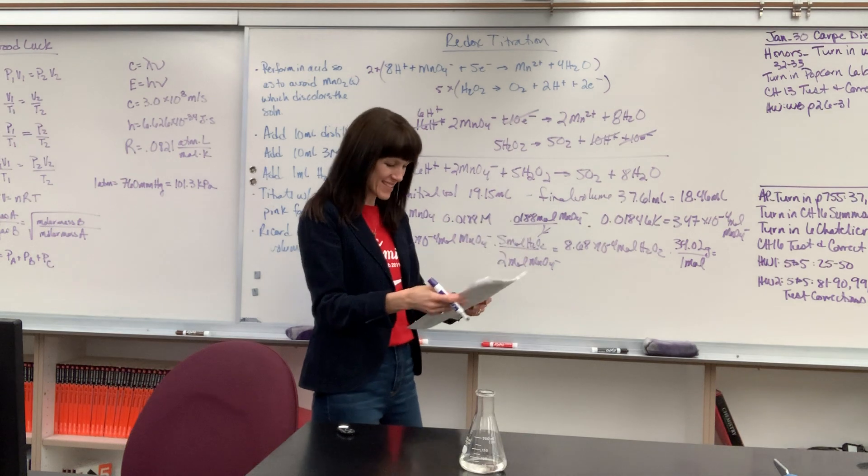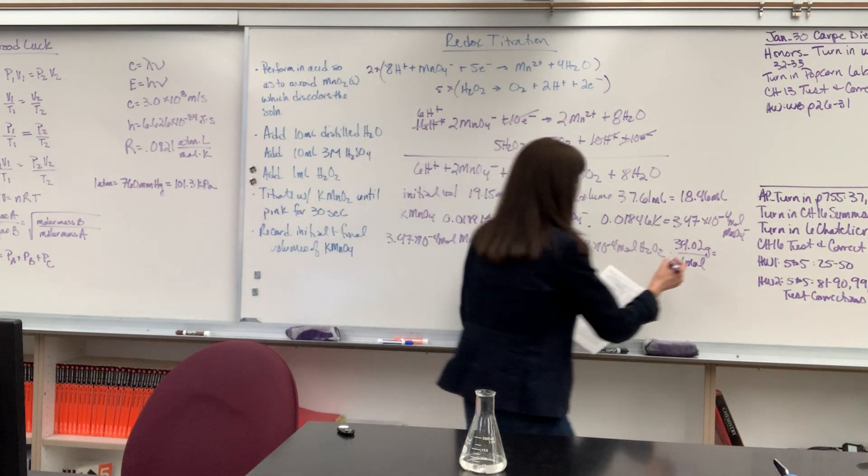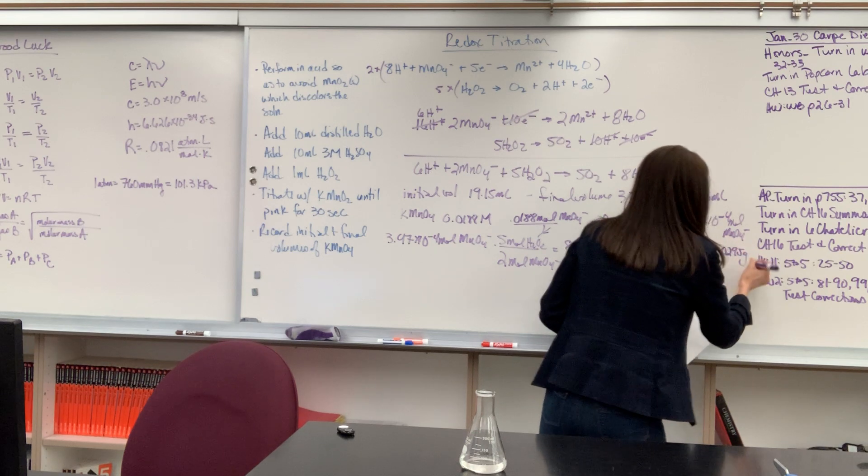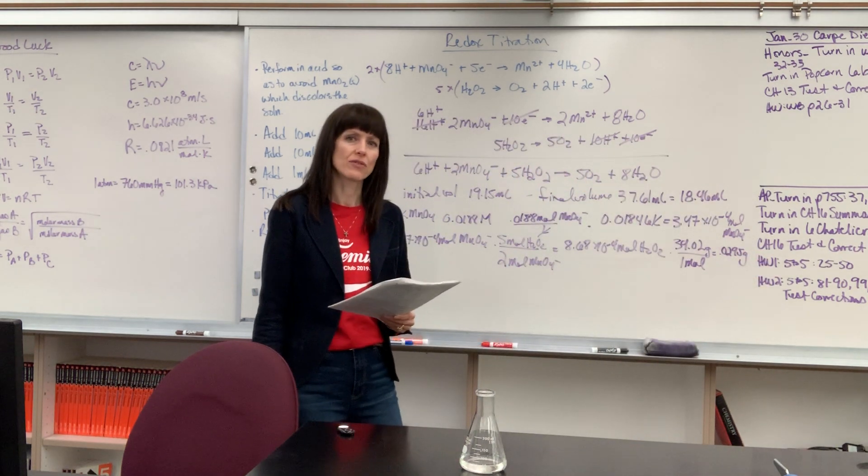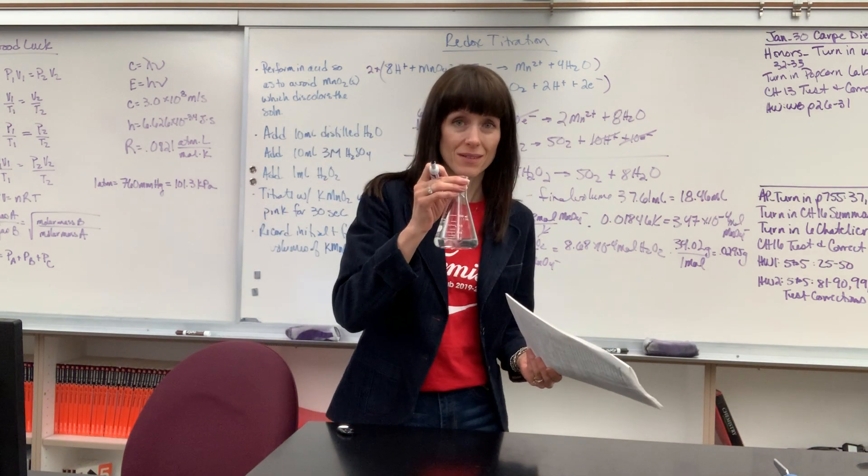So 1 mol of that hydrogen peroxide is 32 plus 2, can be 34.02 grams. And the mass for this, let me give it to you, is going to be 0.295 grams. 0.295 grams. Now remember, I put 1 mil, 1 mil in here.